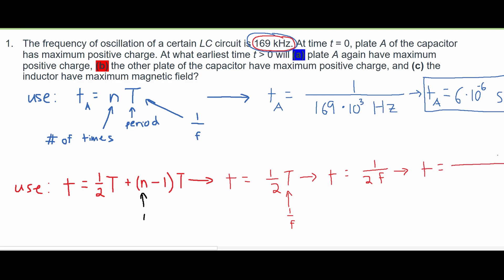And then we can plug in our F, which is 169 kilohertz, but we need to make that hertz. So we can say that that's 169 times 10 to the 3 hertz, because that is the conversion.